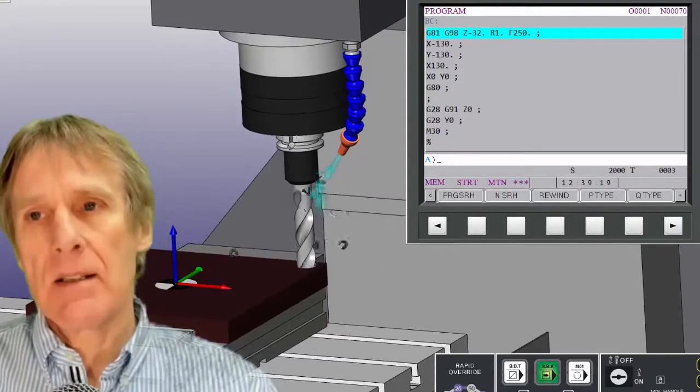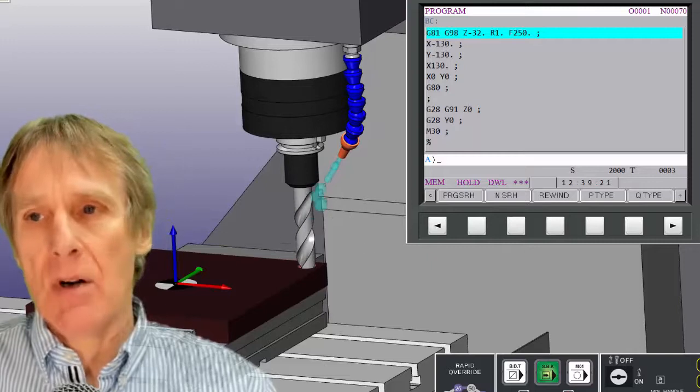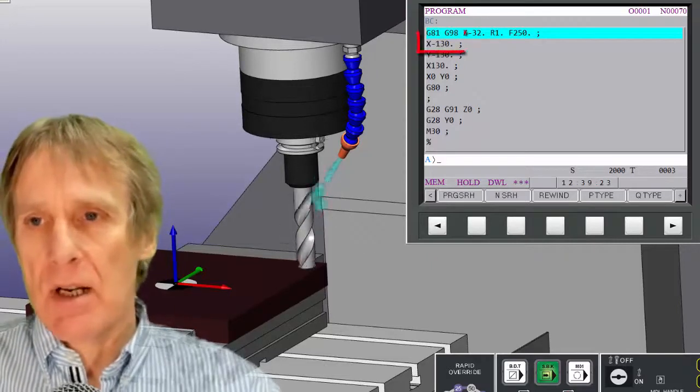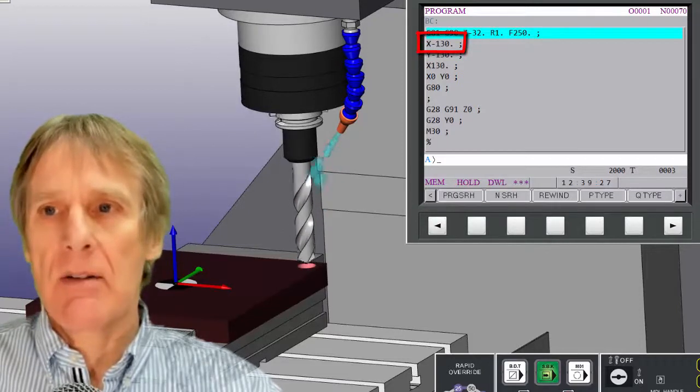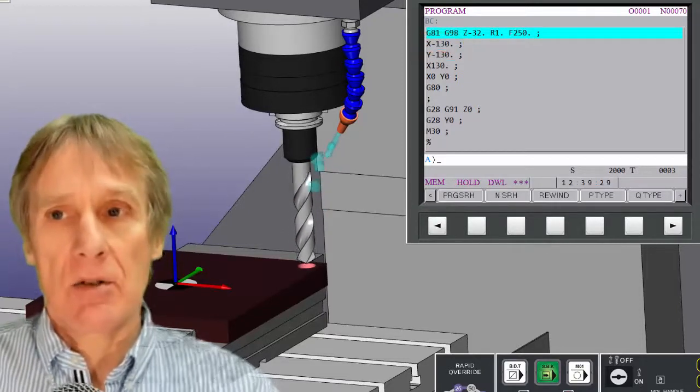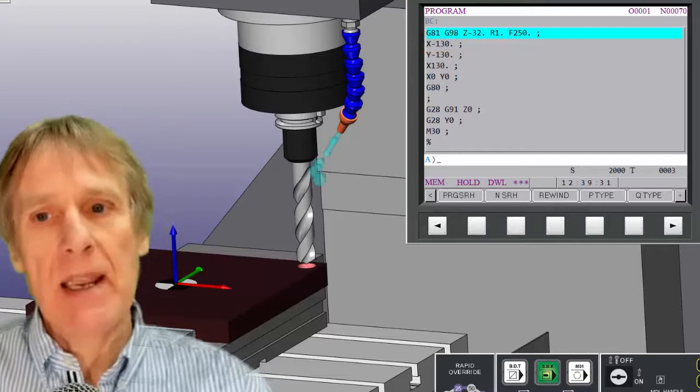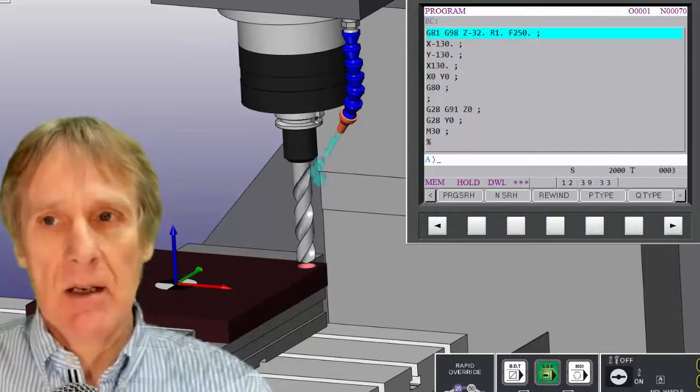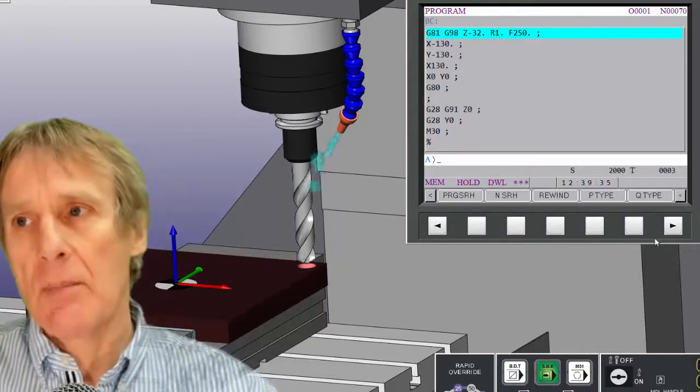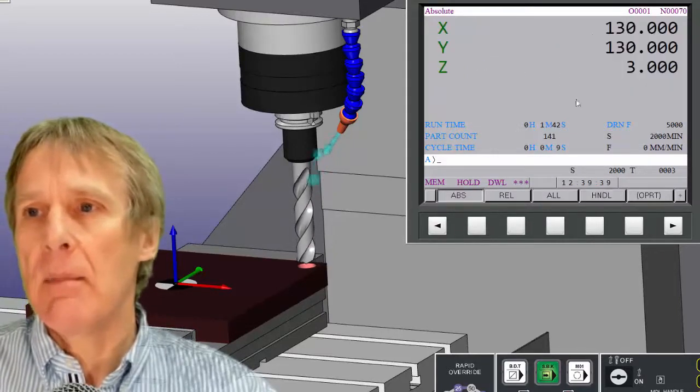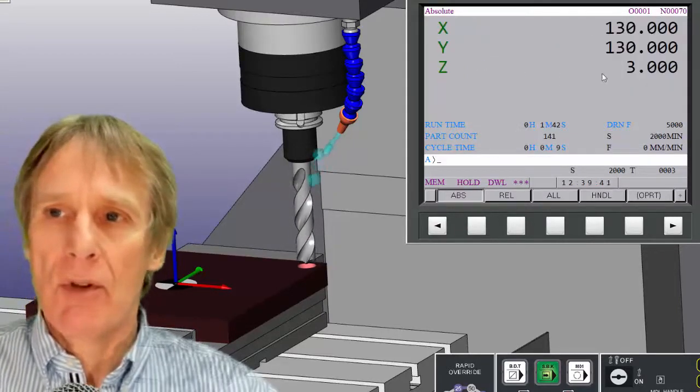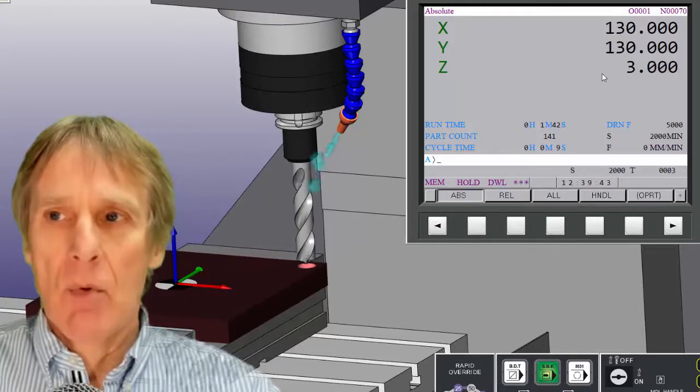And the next thing I'm going to tell it to do is move to X minus 130. Now you'll notice there's no Y figure in there—I don't need a Y figure because I don't intend to move the Y axis, I just want to move the X. Now I could repeat the Y-axis figure. If I look on my position display, it does actually tell me where I am—I'm at 130 and 130, and my Y already is at 130.